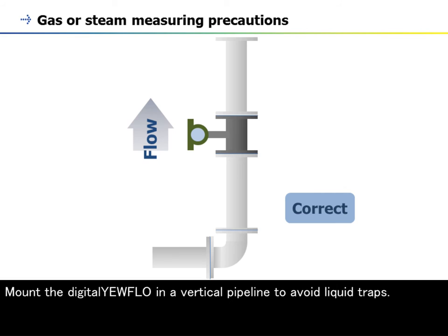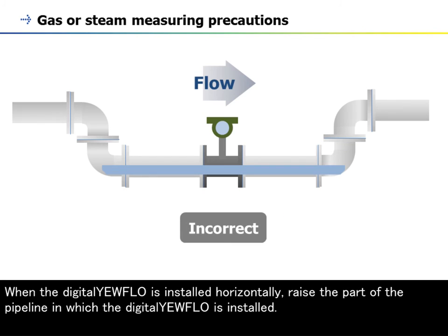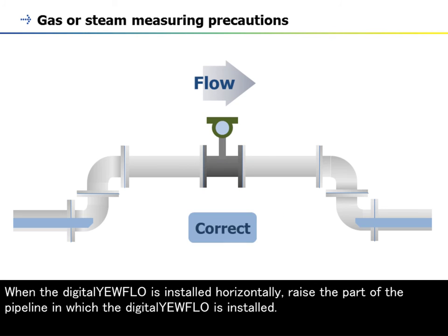Mount the digital yearflow in a vertical pipeline to avoid liquid traps. When the digital yearflow is installed horizontally, raise the part of the pipeline in which the digital yearflow is installed.